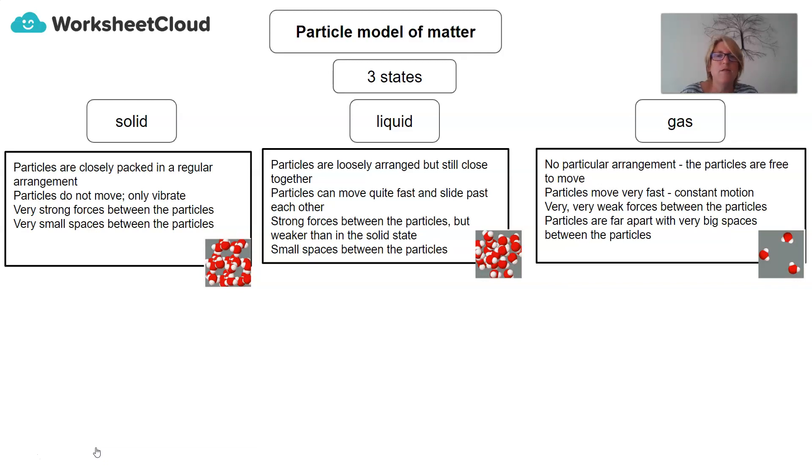In a liquid, the particles are loosely arranged but still close together. The particles can move quite fast and they can slide past each other. There are strong forces between the particles, but they are weaker when compared to a solid. And there are small spaces between the particles.